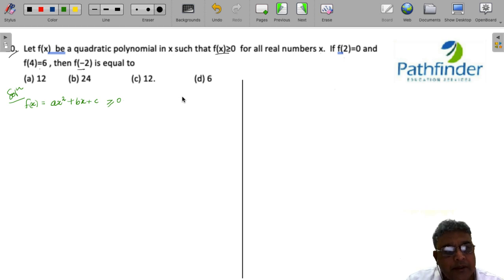One thing that is certain here is this polynomial has to be of this shape because it is greater than or equal to 0 all values. So it has to lie above the x-axis. So one thing is very certain that it is a U-shaped figure.